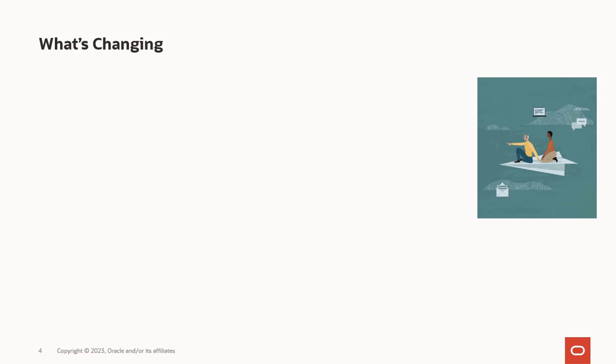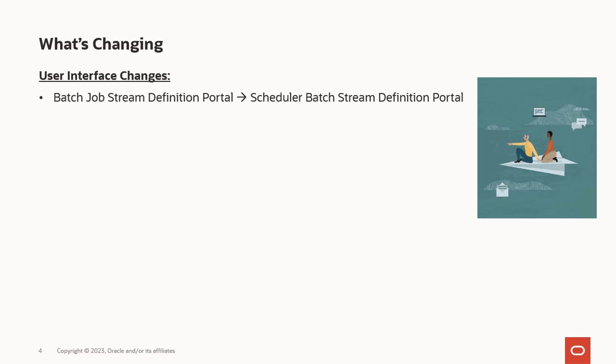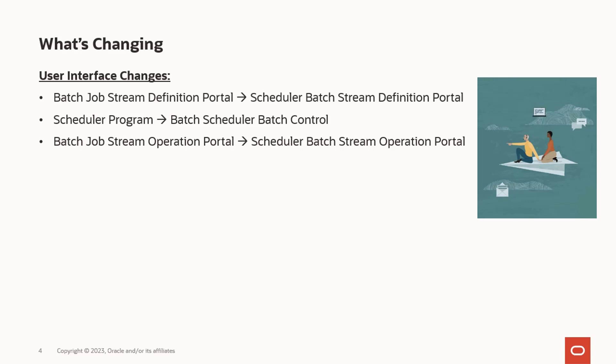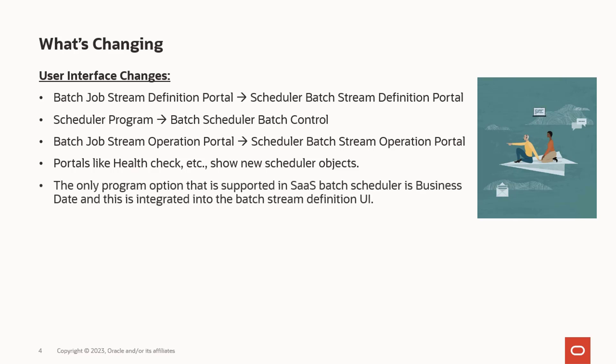We have tried to minimize the impact on the user experience; however, there are changes in the user interface and web services. On the user interface level, we have introduced three new portals: Scheduler Batch Stream Definition, Batch Scheduler Batch Control, and Scheduler Batch Stream Operation portal. These portals will contain enhanced information compared to the existing portals and will contain information on both sides when you upgrade to the 22C release. Customers on 22C are required to use new scheduler objects only. Other portals showing batch stream related information will now show the new scheduler objects.